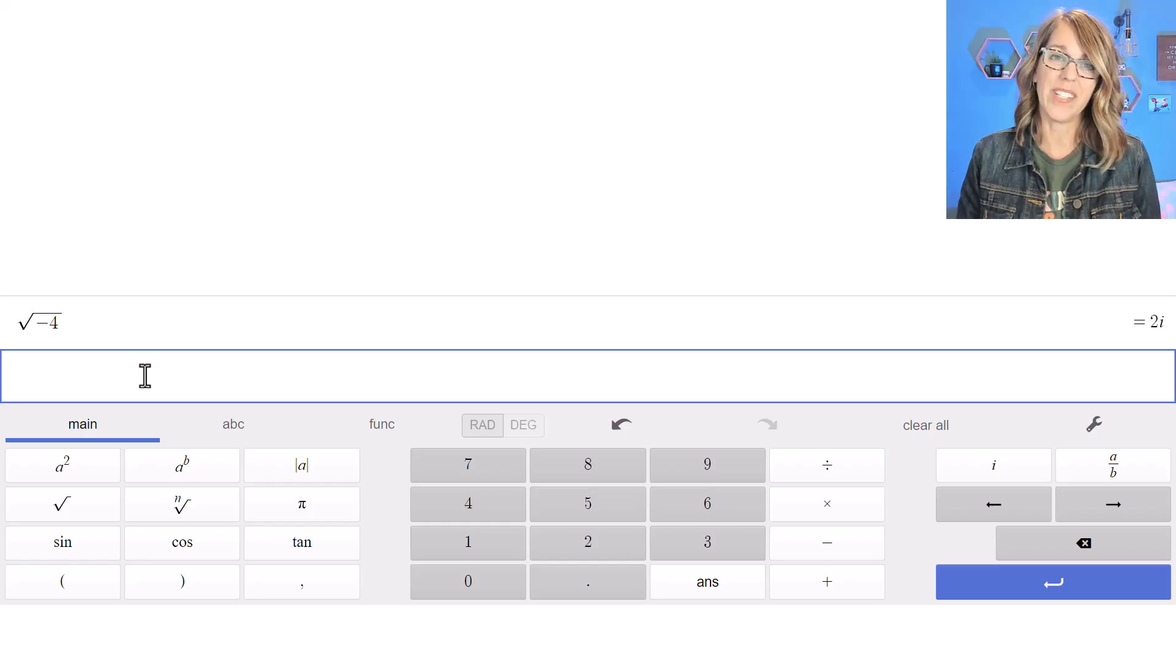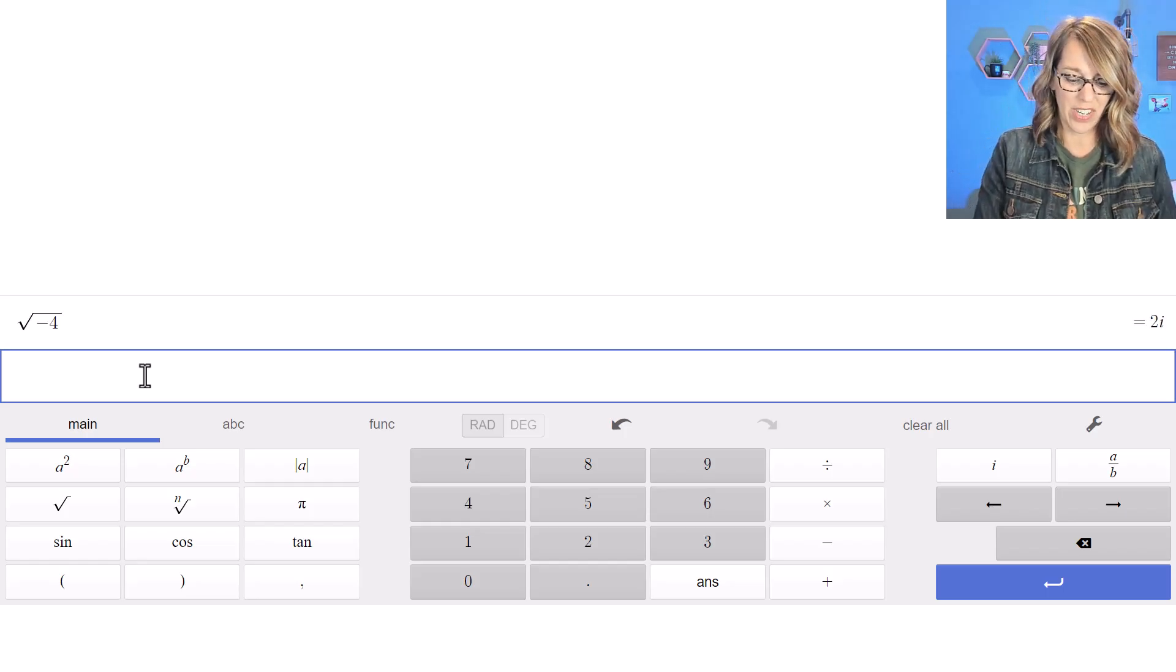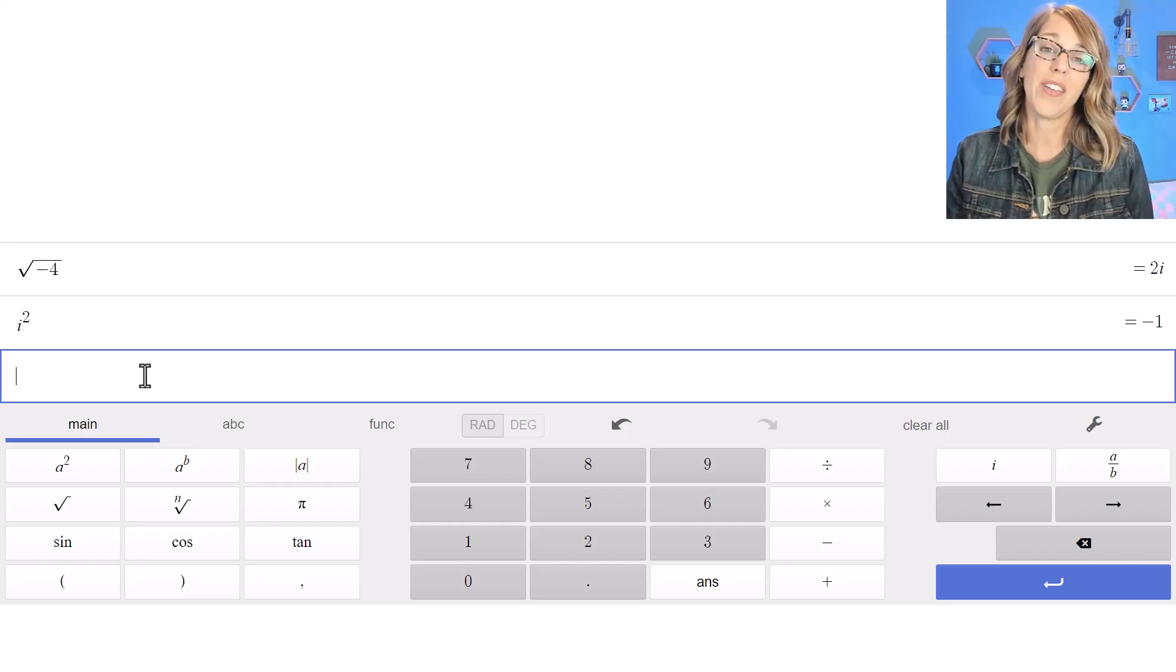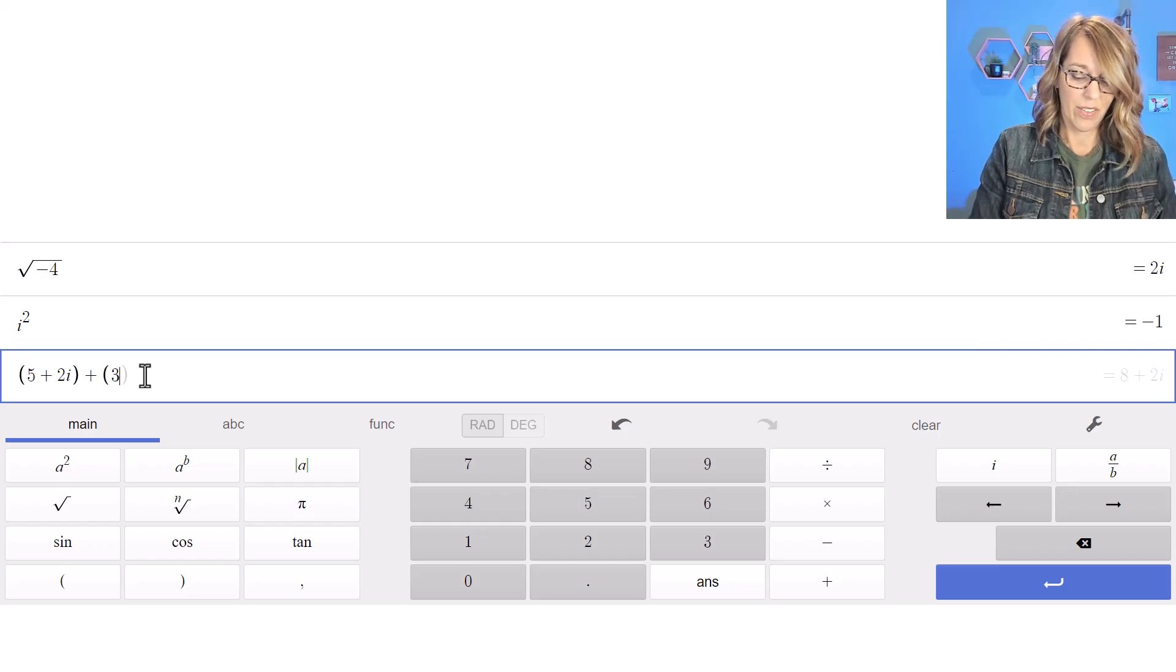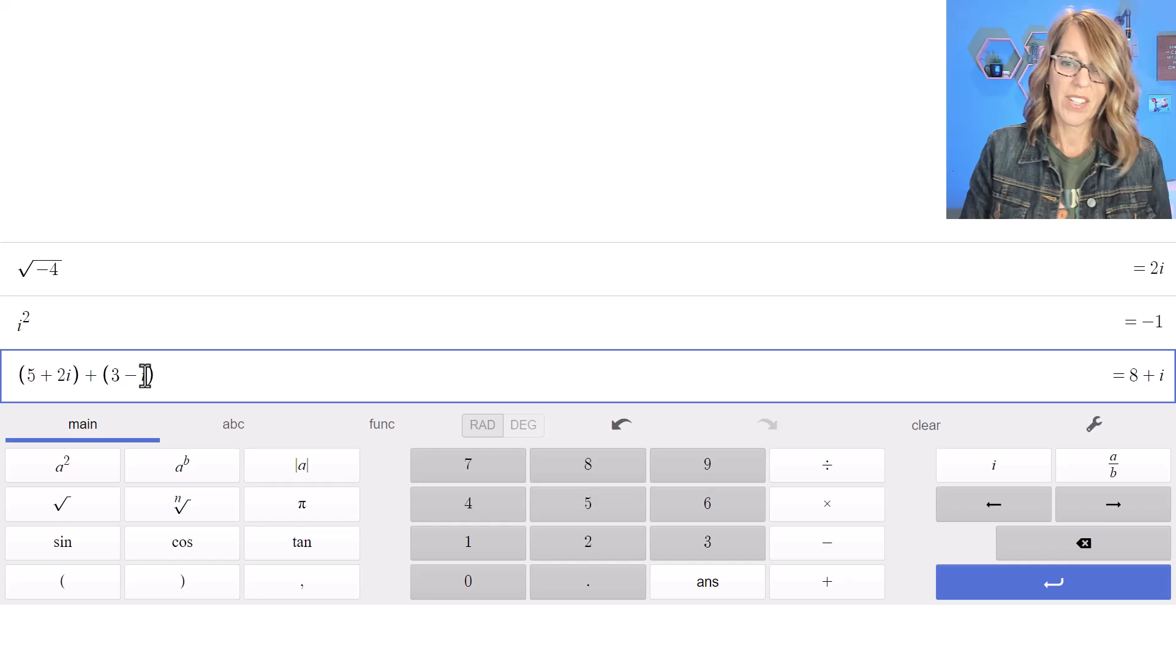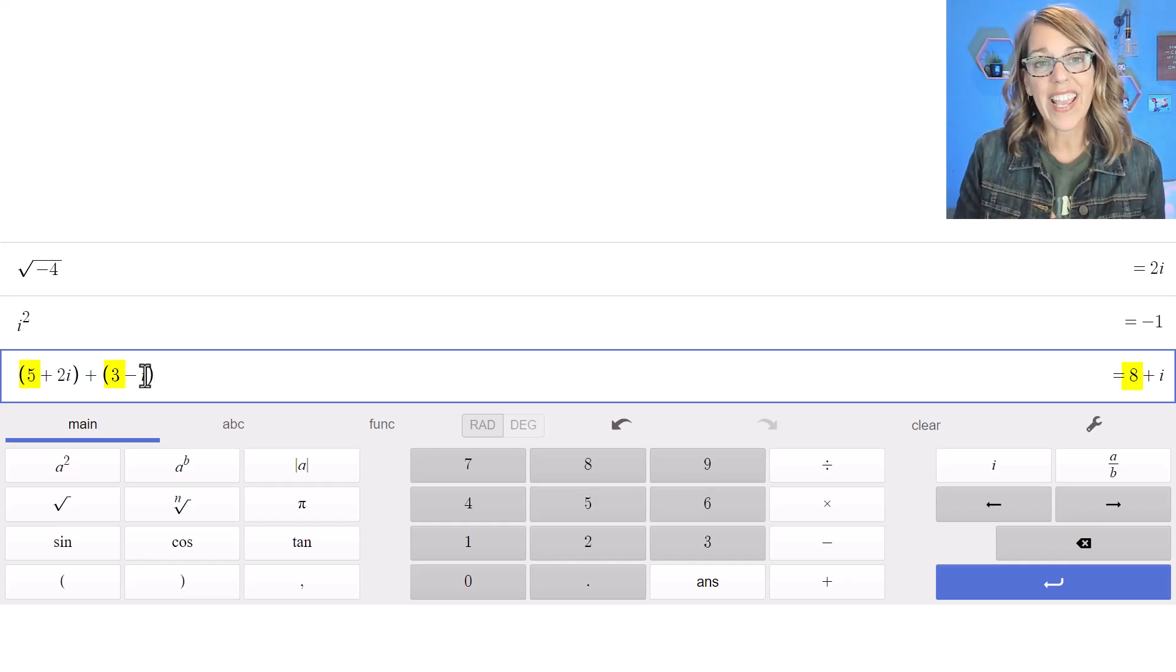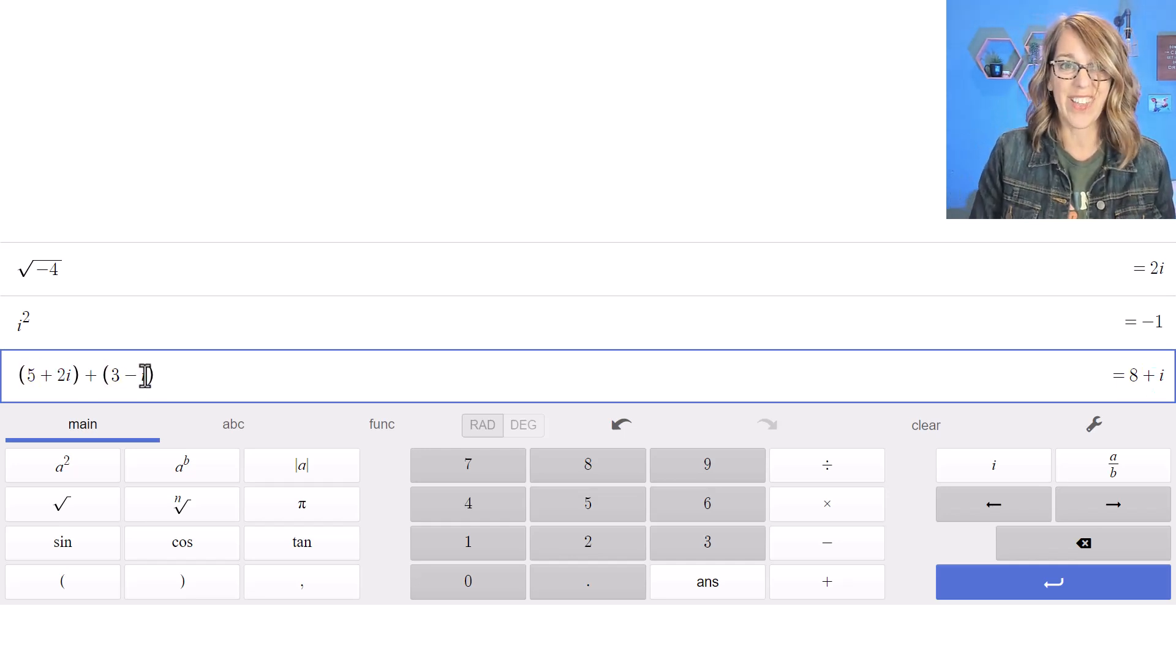I want to grab another empty cell and we can do some more calculations. For example, I can do i squared and that gives me that value negative 1. I can also add complex numbers together. So let's do 5 plus 2i and then we'll do plus 3 minus i. Notice how it adds those real and imaginary parts together.